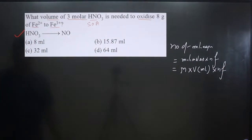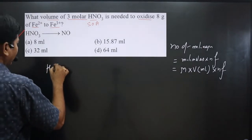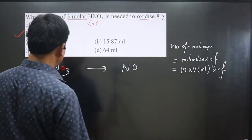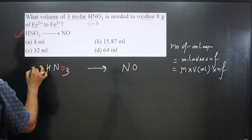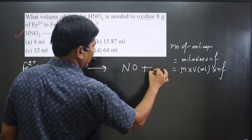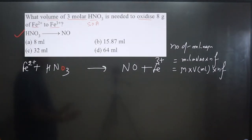So first of all, we write down the complete reaction. Pay attention carefully. We have HNO₃, a strong oxidizing agent, converting into NO. But it is oxidizing Fe²⁺. Fe²⁺ is undergoing oxidation reaction converting into Fe³⁺. The equation is ready and we can easily calculate n-factor value.